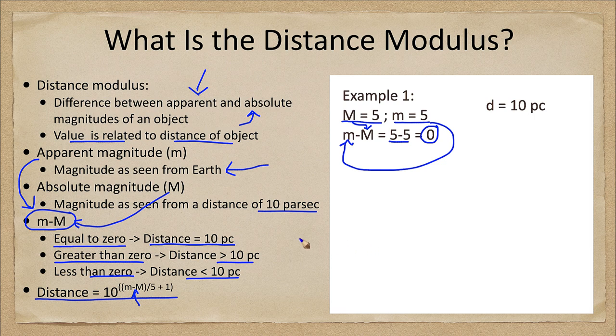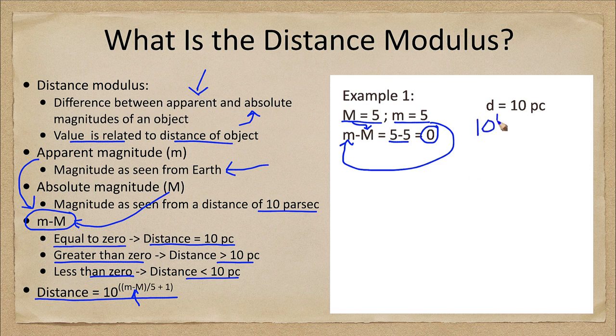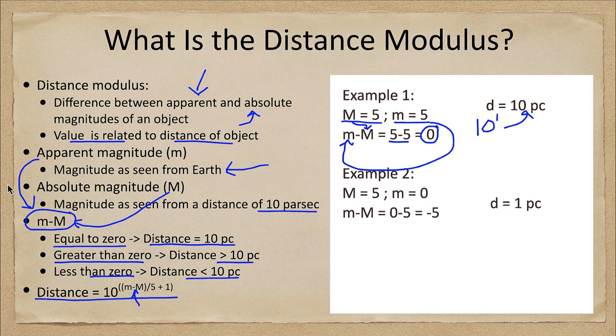If we go back to our equation then we would divide 0 by 5 and would still get 0, and we would add 1 to that and get 1, and 10 to the first power would then be 10 parsecs.